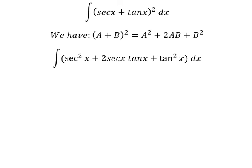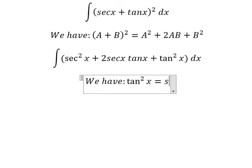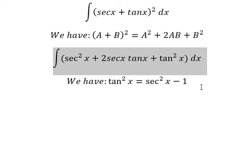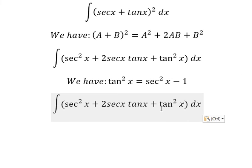Next we have the second formula in here: tan x square equals sec of x square minus 1. So we need to change this one into this one.